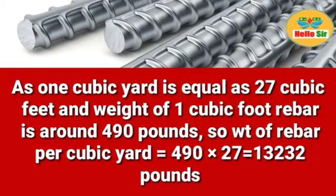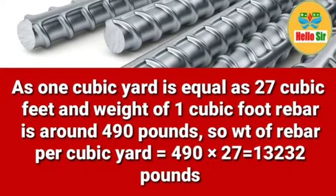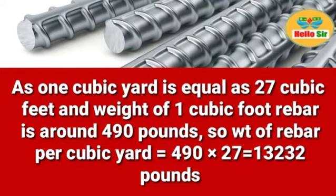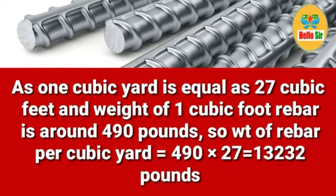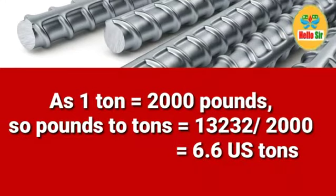One cubic yard is equal to 27 cubic feet, and the weight of one cubic foot of rebar is around 490 pounds. So to find the weight of rebar per cubic yard, we multiply: 490 × 27, which comes out to 13,230 pounds.